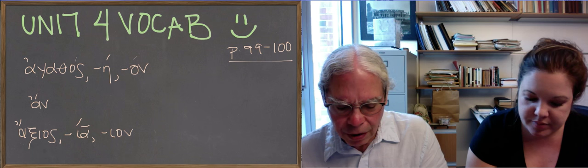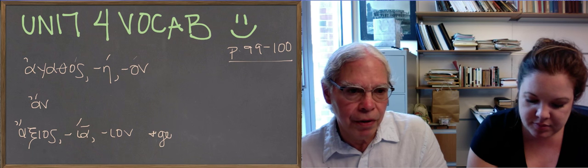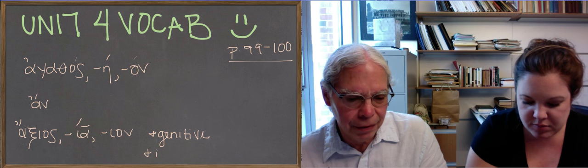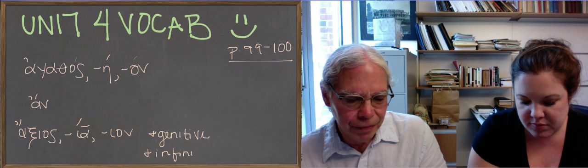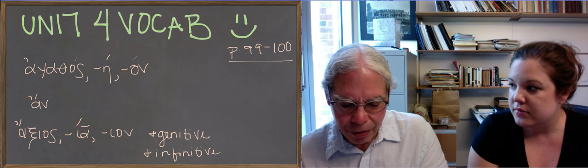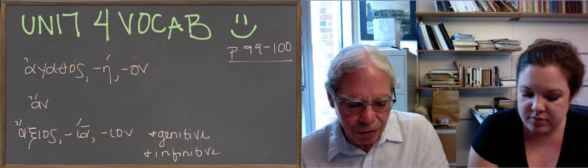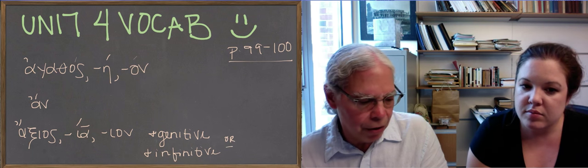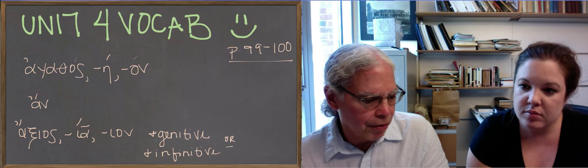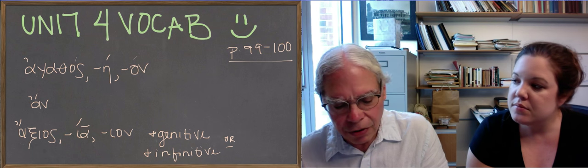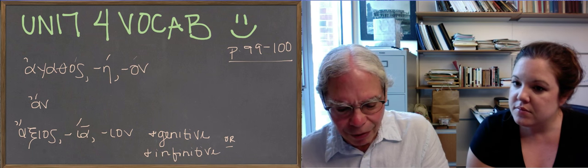You get it used with the genitive. You can also have an infinitive with it. You can say worthy to do something, worthy of doing something, or something like that, and you do it in Greek with an infinitive. So the genitive is worthy of, you're worthy of honor, you're worthy of esteem, and stuff like that. You can be unworthy of the same things.